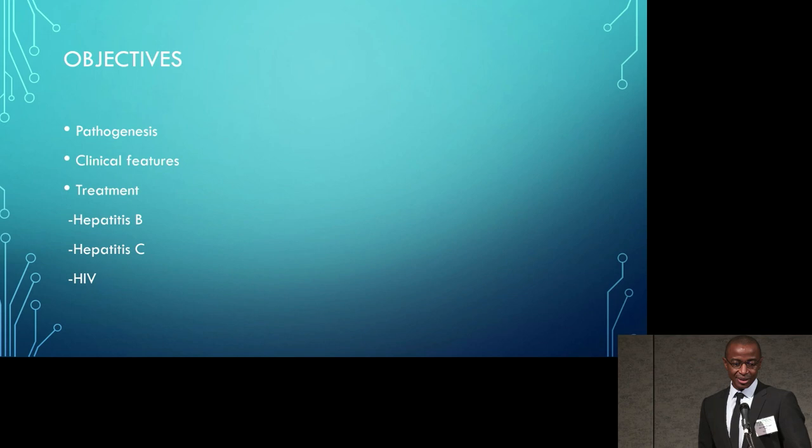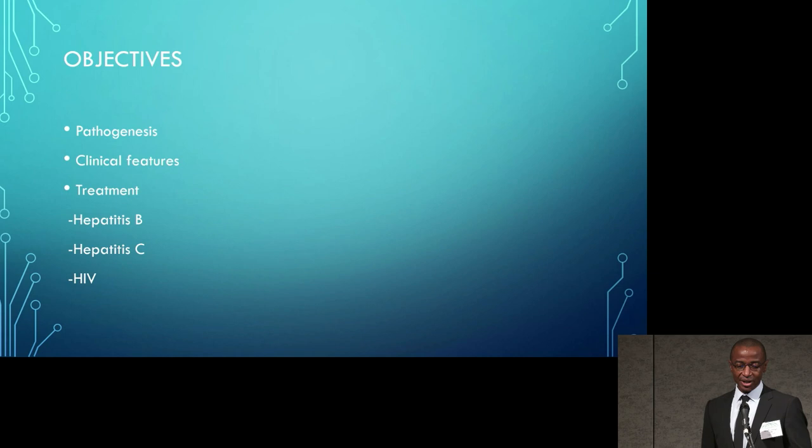The objectives of this talk are primarily to discuss pathogenesis. We'll look at viral infection in general, and at clinical features of viral infection, specifically focusing on hepatitis B, hepatitis C, and HIV. There will be one slide briefly about SARS-CoV, and we'll make mention of one or two other viral diseases of importance.